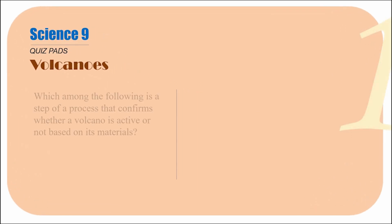For the first question: which among the following is a step of a process that confirms whether a volcano is active or not, based on its materials? What you need to realize is that I am specifically asking for a particular process involved when materials are being examined. Remember, there are two ways to classify a volcano as active or not — historical and material-based.